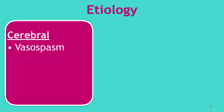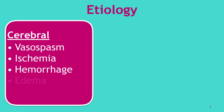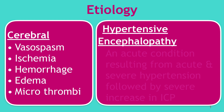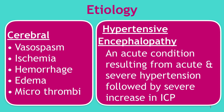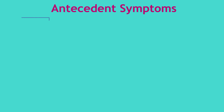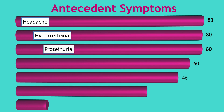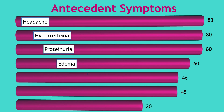The exact cause of these seizures is unknown. There are many theories — it could be because of cerebral vasospasm, ischemia, intracranial hemorrhage, cerebral edema, or formation of microthrombi in cerebral blood vessels. Hypertensive encephalopathy is defined as an acute condition resulting from acute and severe hypertension followed by a severe increase in intracranial pressure. The three most common symptoms that precede the onset of a seizure are headache, hyperreflexia, and proteinuria, occurring in more than 80% of cases.